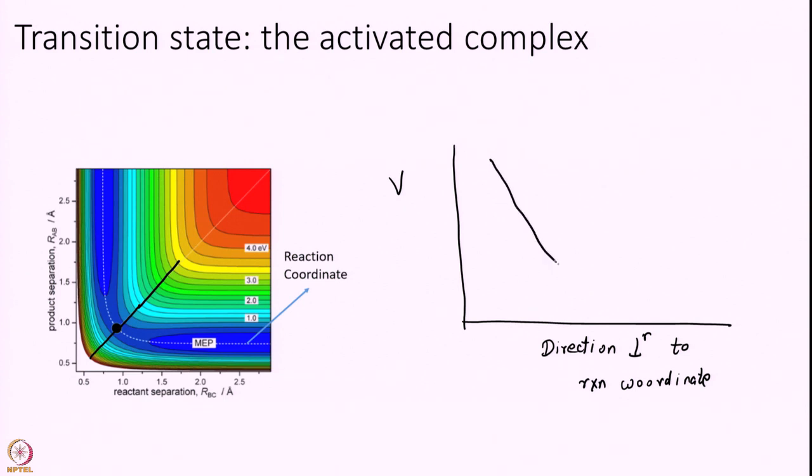You will get a potential that will typically look like this. And this point is the transition state. This is the point that connects here. So, this is very important to know and this is critical in understanding transition state theory.